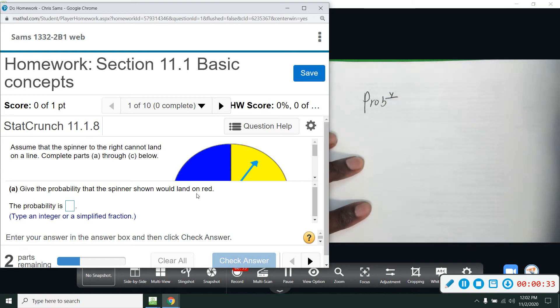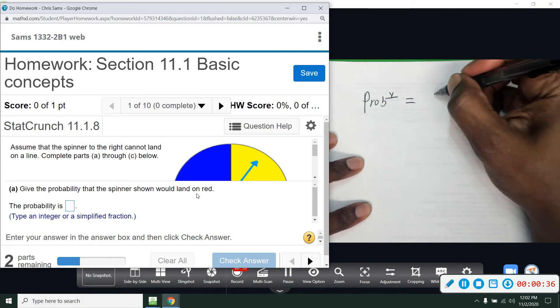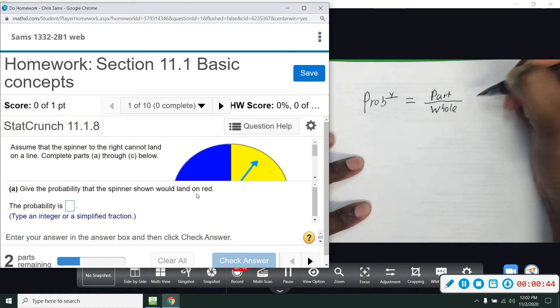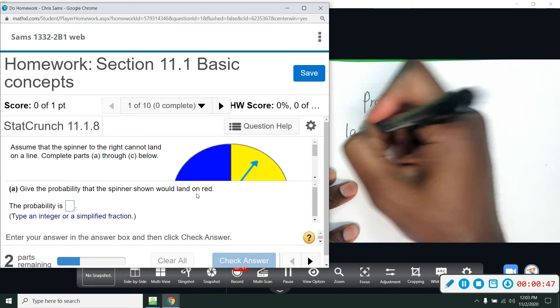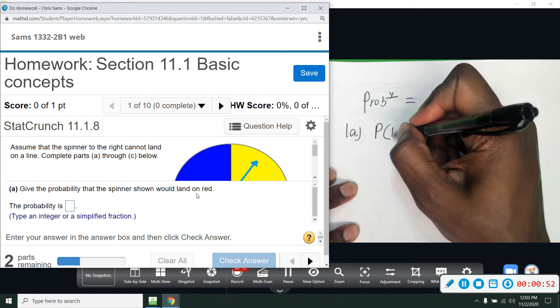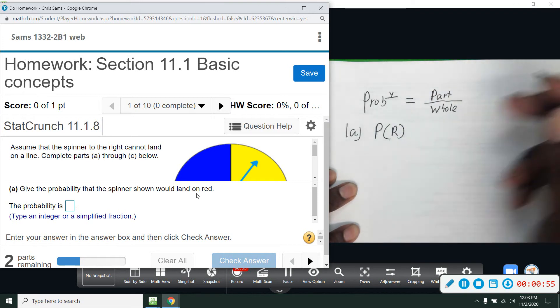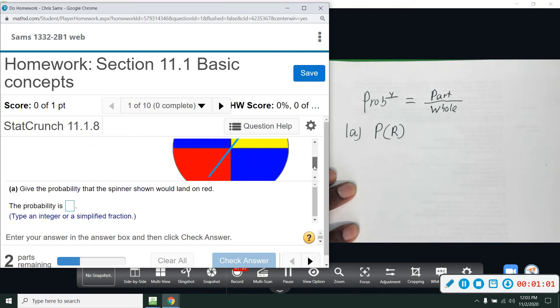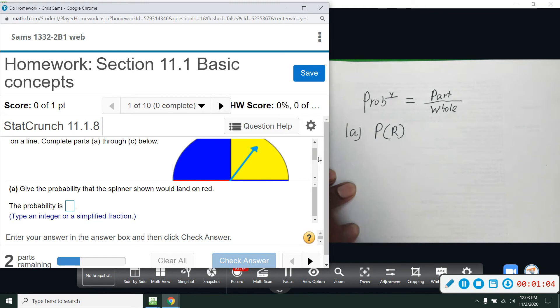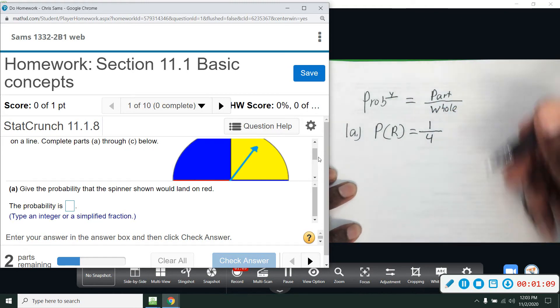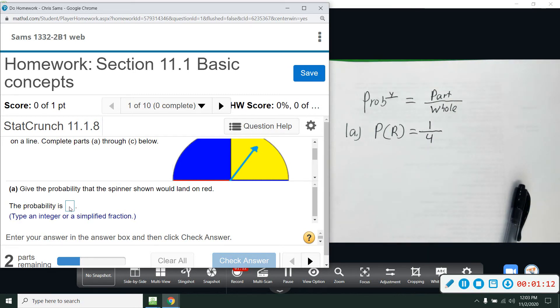Okay, so probability, I'm going to note this with PROB. The way you compute probability is the part over the whole. For this first part, 1A, we want to know the probability of red, so I use P and then in parentheses I'm going to use a capital letter R, meaning red. On this diagram, let's count - there are four sections, so that's the whole, and there's one that's red. So 1/4 is the probability that we will land on red.